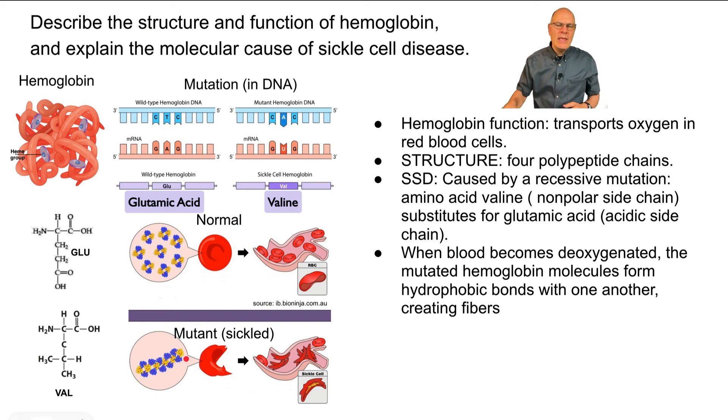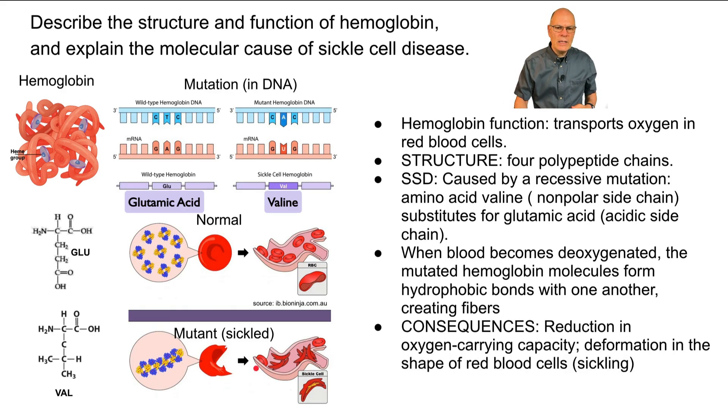They cause fibers to develop within the cells. And that causes the cells to become spiked like this. They're mutant cells. And those cells will then clump up within smaller arteries. And that causes these pain crises. It causes tissue damage. It's a debilitating disease.